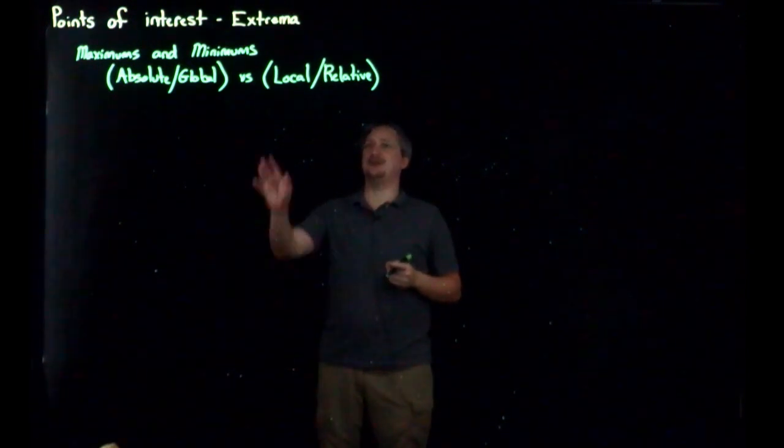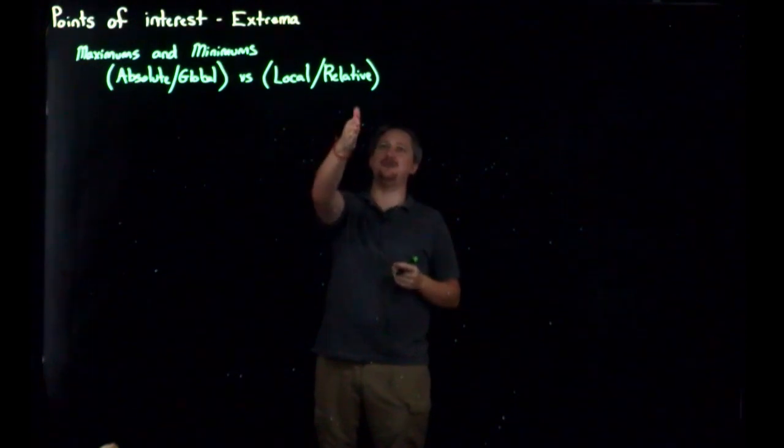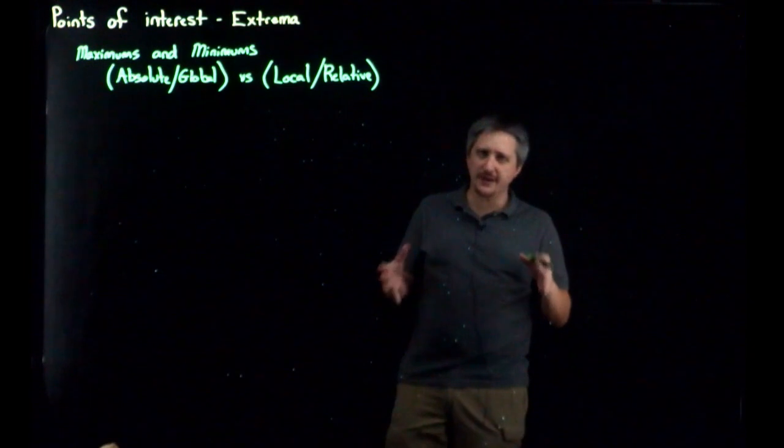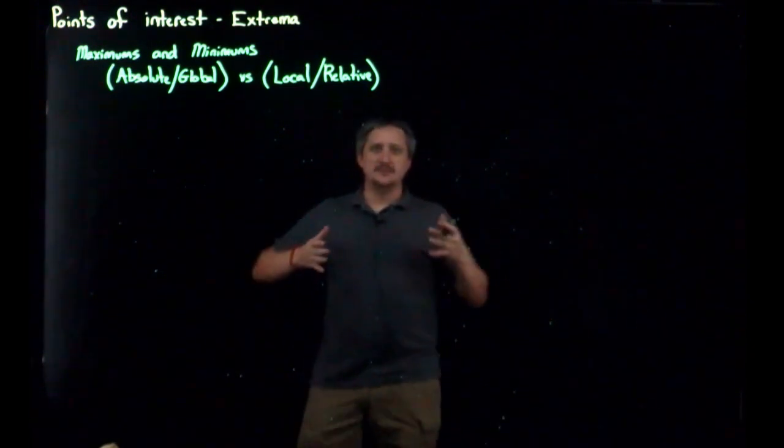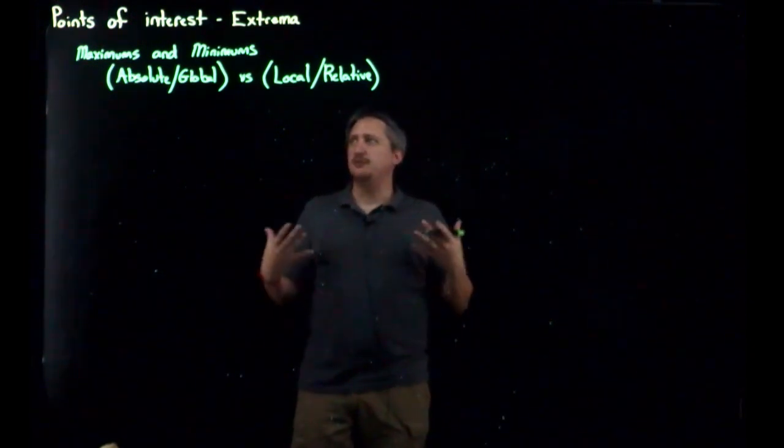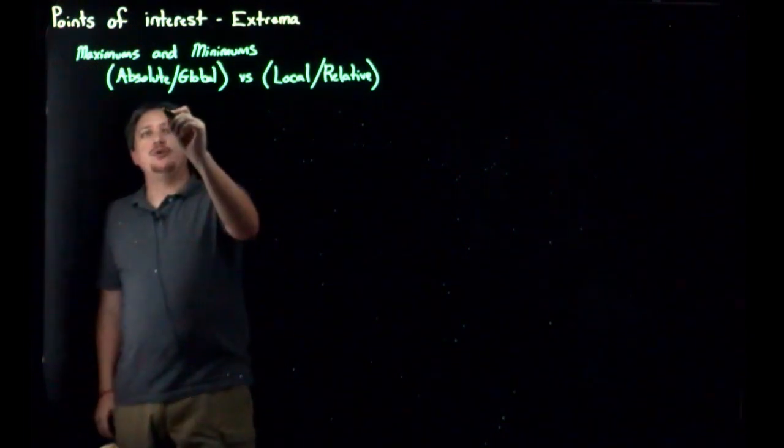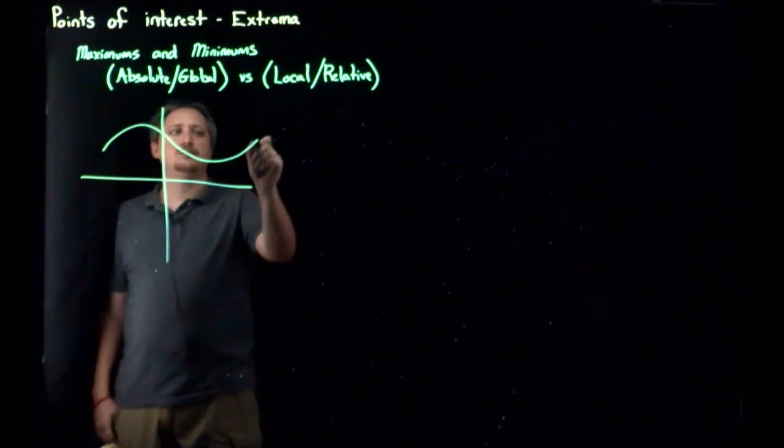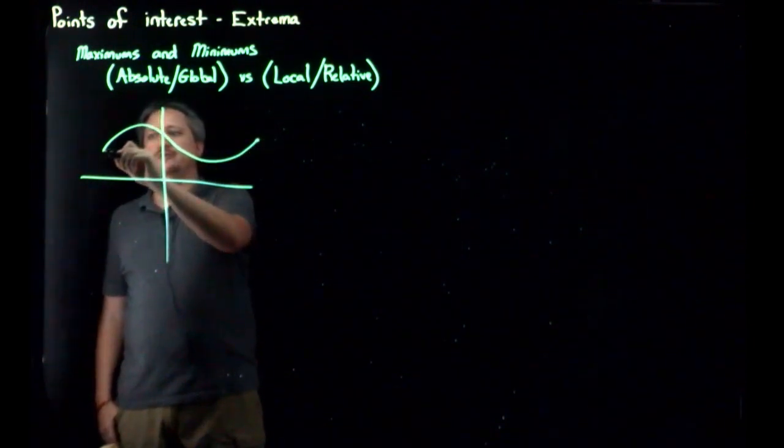Which I guess, with the way I wrote them, I should have flipped it. Because absolute usually goes with relative. Global usually goes with local. But that's fine. So let's look at an example. Because again, this is geometric, what we're talking about. We're going to be looking at these things. So let's just take a random curve, my sort of go-to weird looking curve.